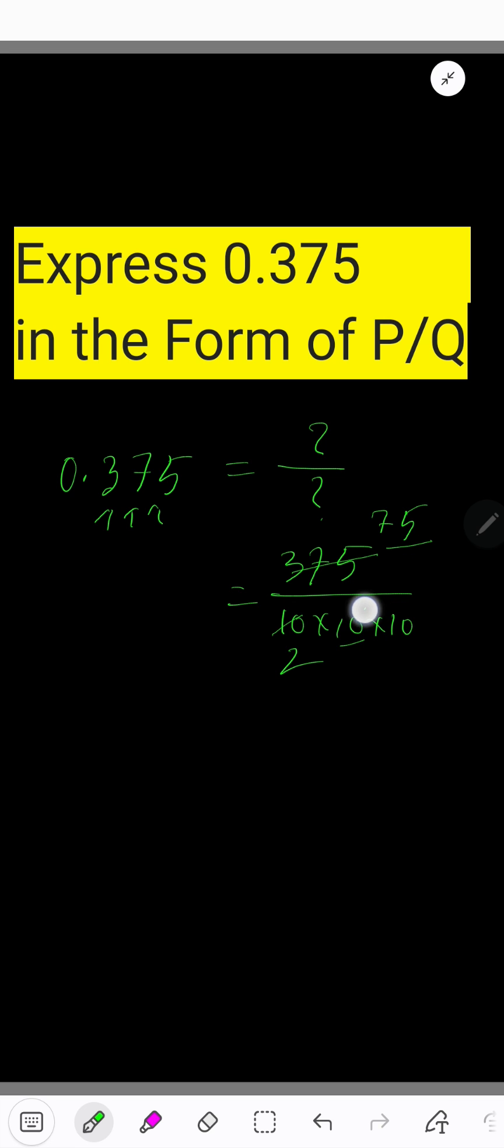If you divide this 10 by 5, you will get 2. If you divide this 75 by 5, what you will get: 5 goes into 7, 1 time. 1 times 5 is 5. Subtract, you are getting 2. Bring down the next digit. 5 goes into 25, 5 times.